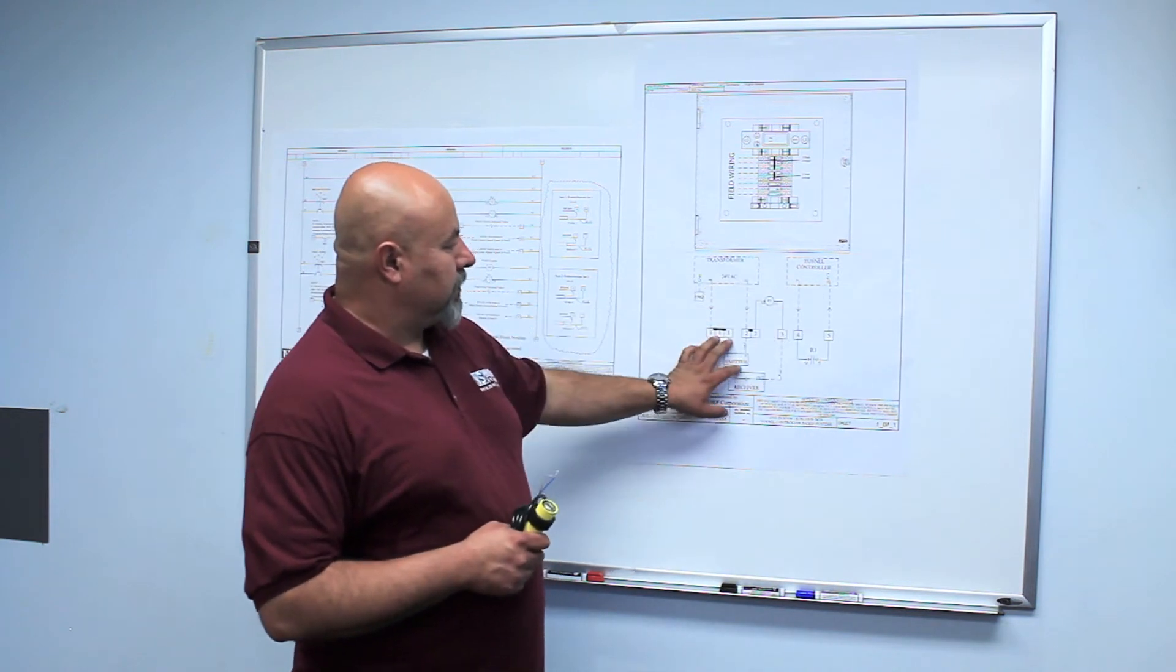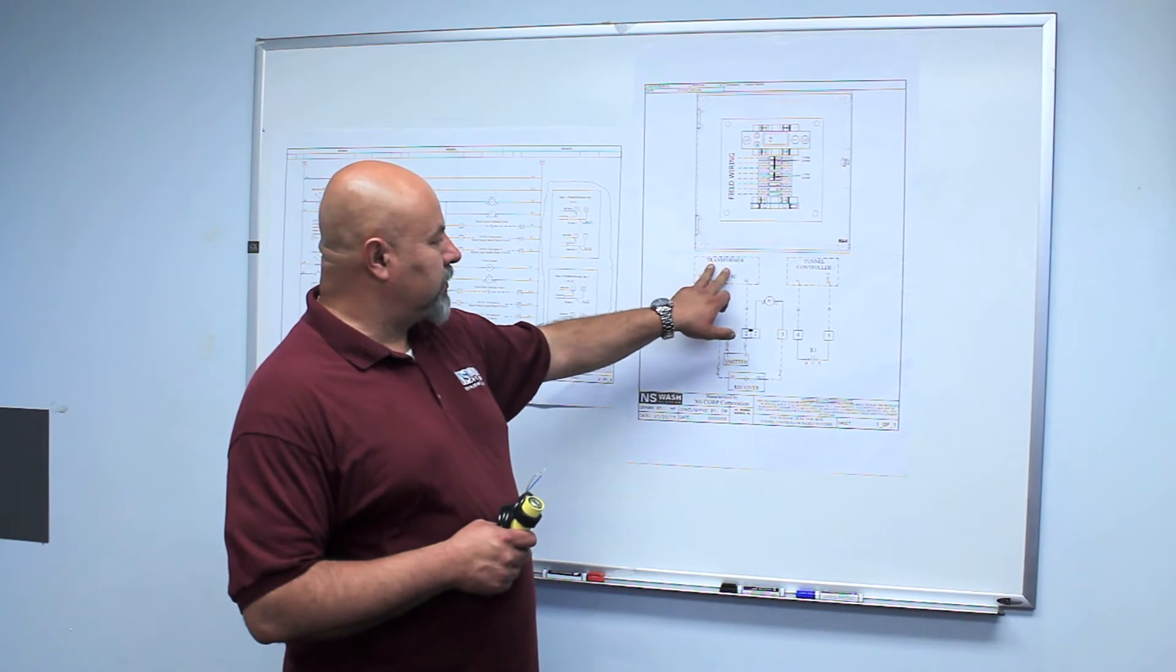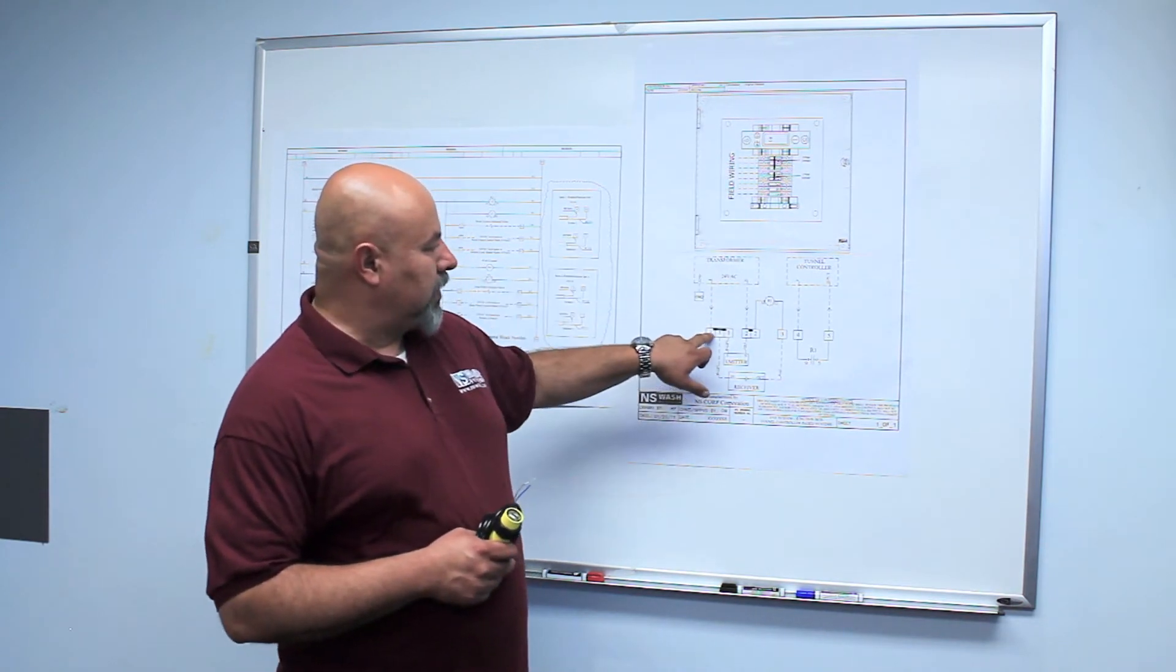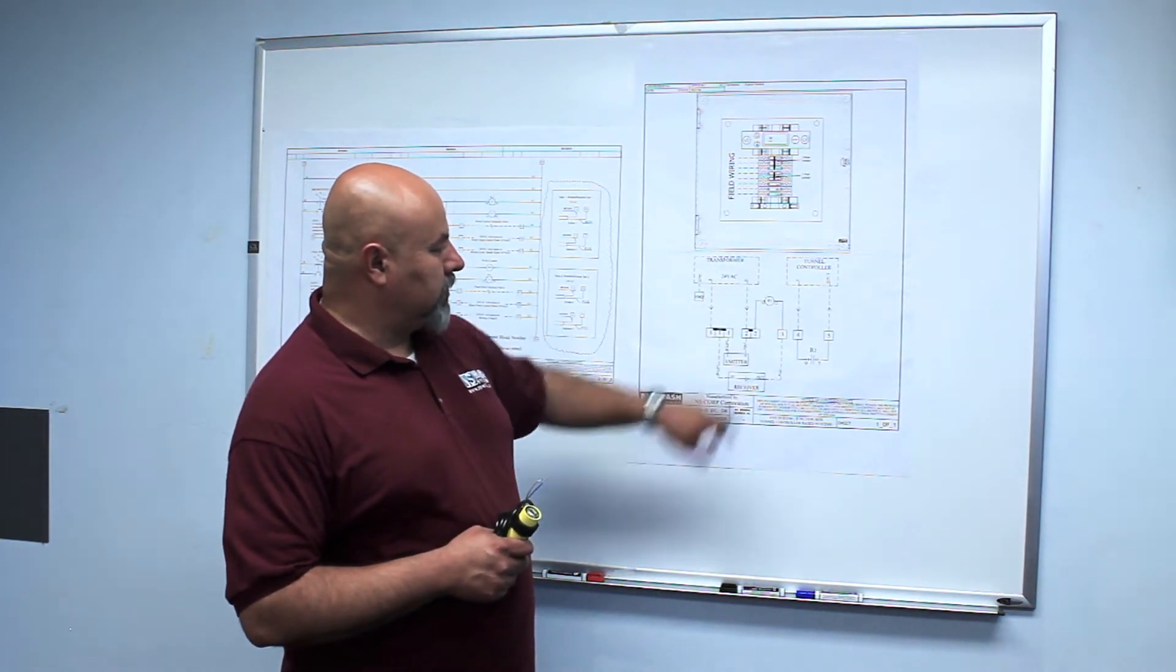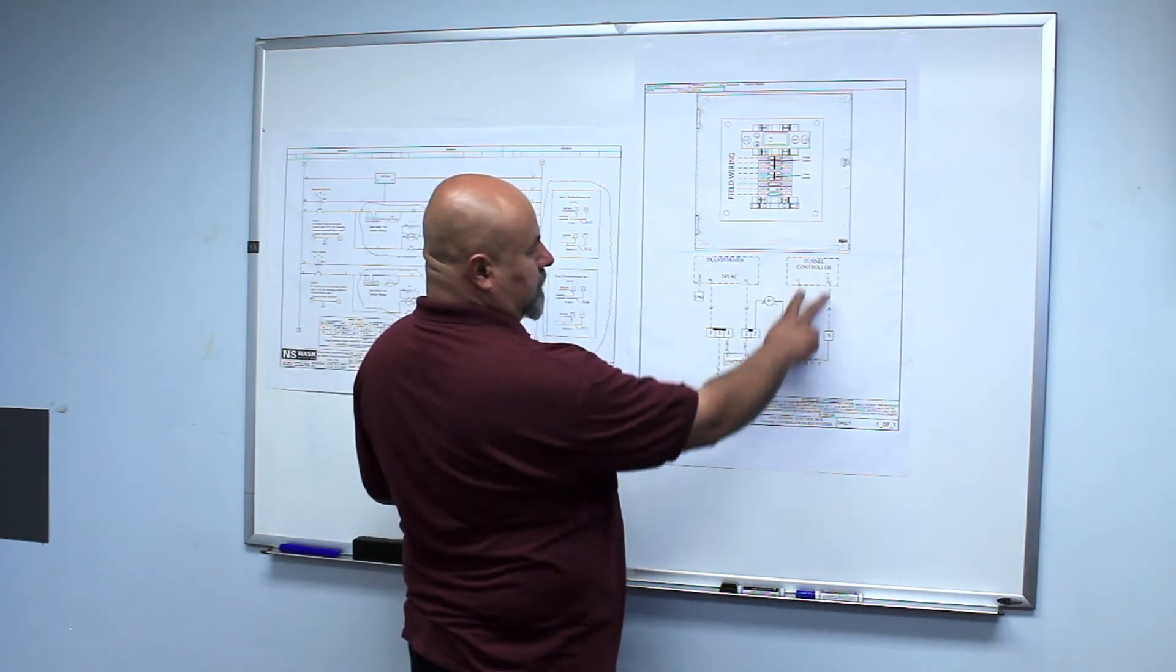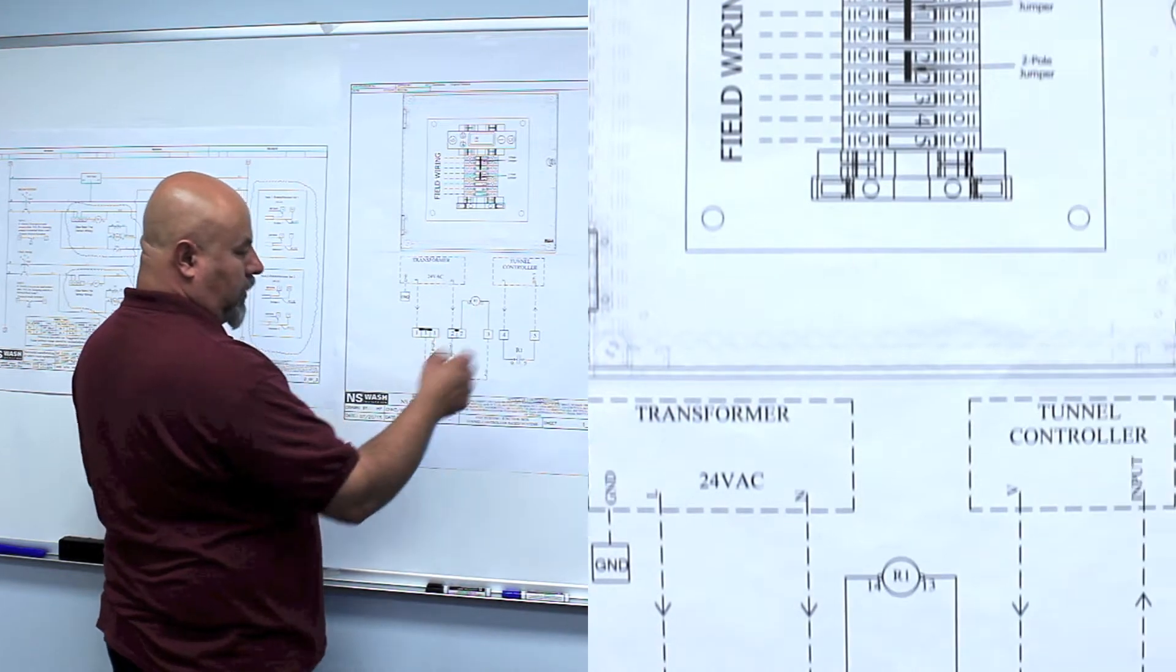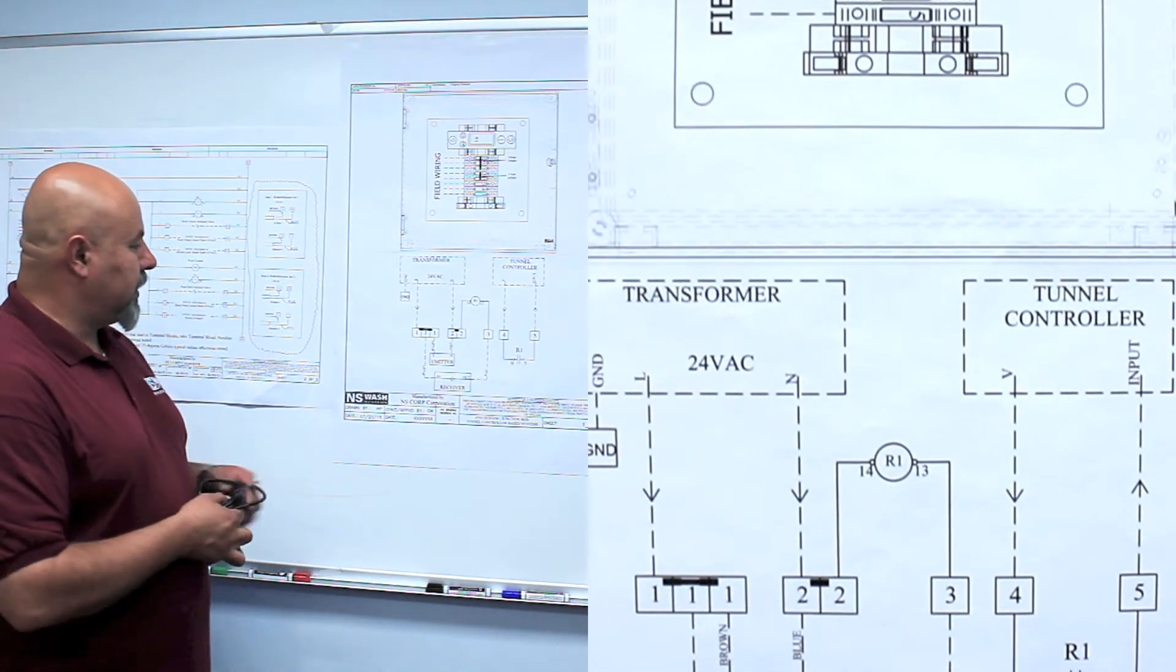Here's how this wiring connects. You have to bring in from your transformer 24 volts to this panel, which is wired to number one, the load side of the panel, the neutral side of the panel to number two. The output of this would be to your tunnel controller out of R1, relay one. Now, here's how the photo eyes connect in here.